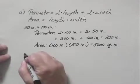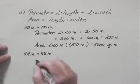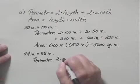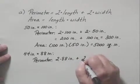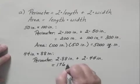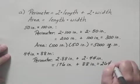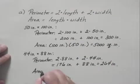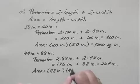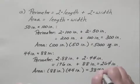That's the first table. The second table was 44 inches by 88 inches. We find the perimeter again. That's 2 times the length plus 2 times the width, which is 176 inches plus 88 inches, or 264 inches. The area is the length times the width, which would be 88 inches times 44 inches. And if we do that multiplication, we get 3,872 square inches.